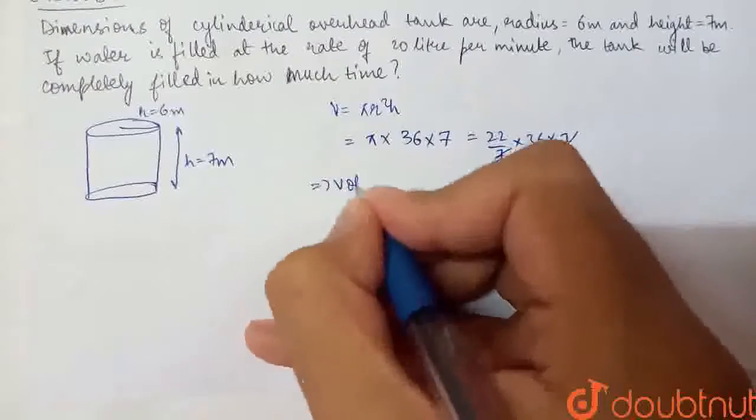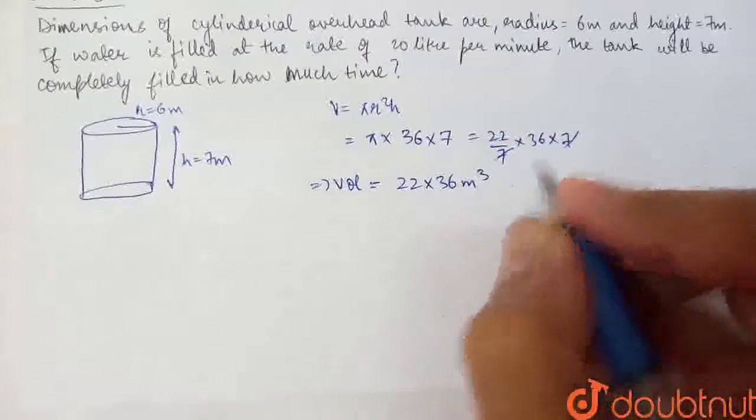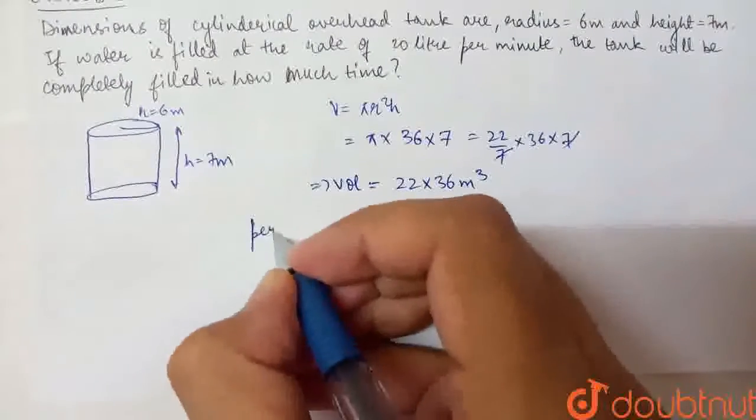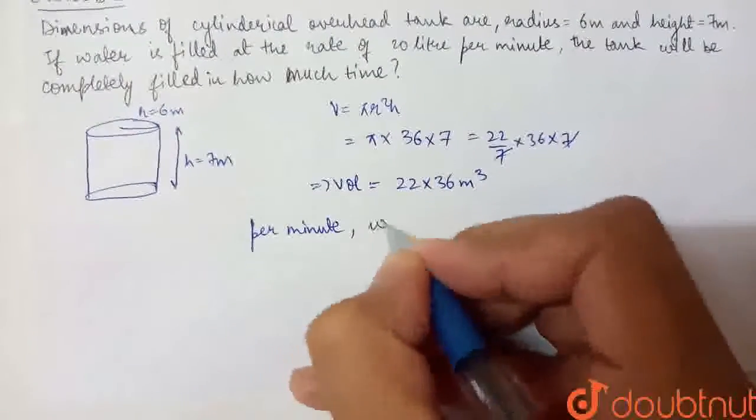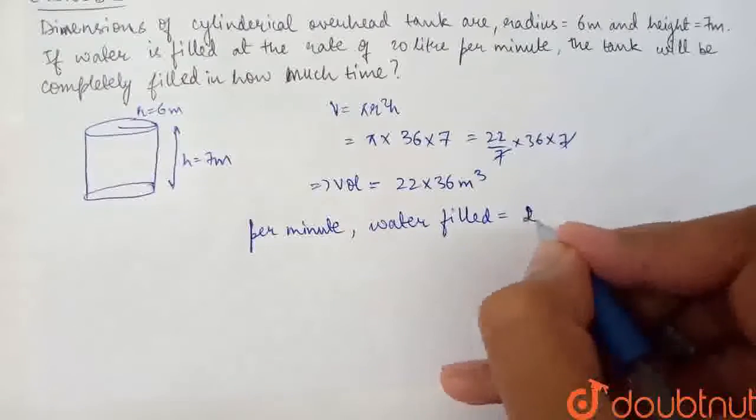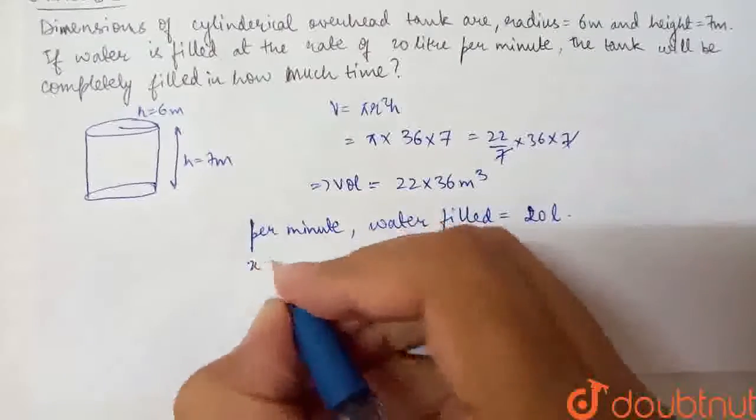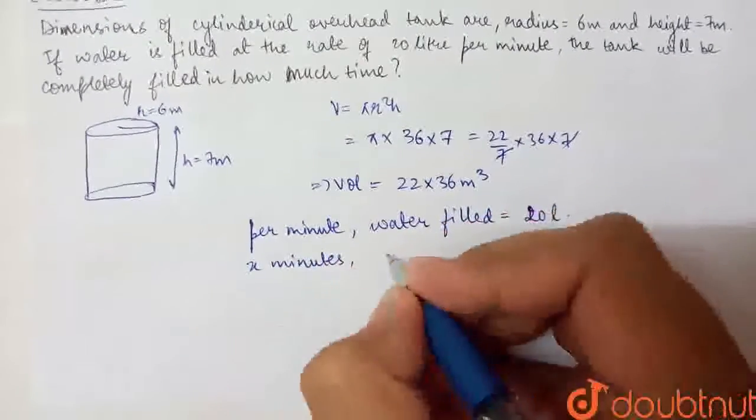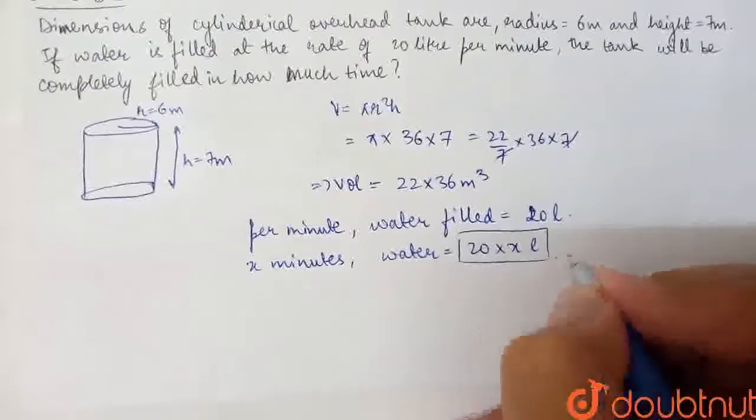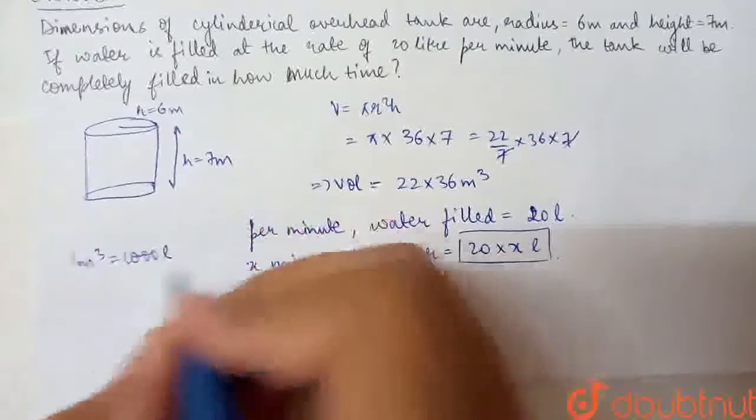What is the volume filled at 20 liters per minute? Okay, so we have x minutes. Let's suppose x minutes. How much water? 20 times x liters. So in x minutes we have 20x liters of water filled, and we know that one meter cube is basically thousand liters.